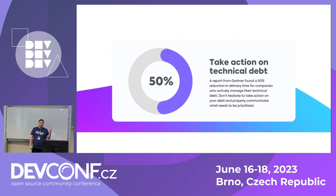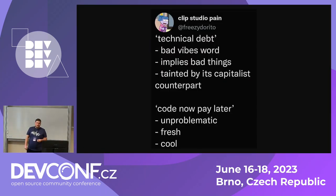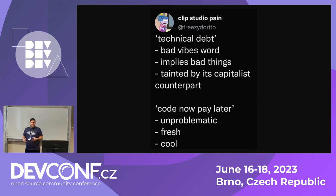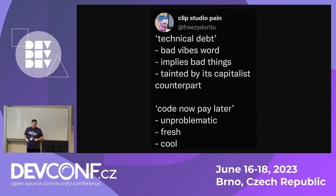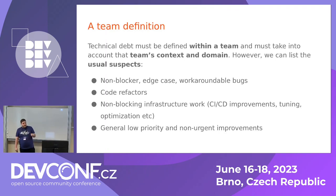So you might be wondering: how do we do it? We first need to define what technical debt is — and believe it or not, the semantics actually matter here. Some people argue against the term itself, citing that it can be deceiving. Some eccentrics even advocate sticking a banana peel on the ticket to force you to address it as soon as possible, since nobody wants a dirty working environment. The important message is that each team needs to define what constitutes technical debt for them. The usual suspects are...